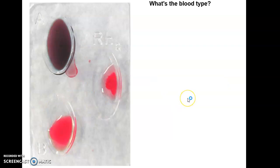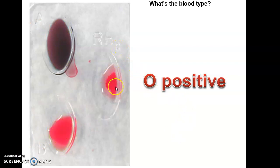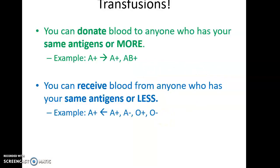This next one is a little trickier — it turns out to be O positive. You don't really see anything happening in well A, don't really see much happening in well B, but in the Rh well it does seem to have agglutinated. That makes this positive for Rh. No A, no B — so that's O, meaning zero, absent, not there — and then positive because we do see the Rh factor.